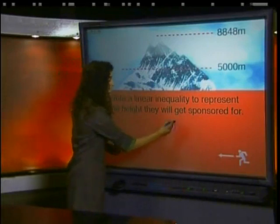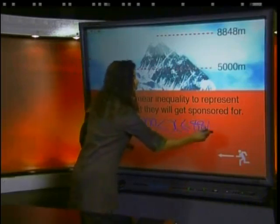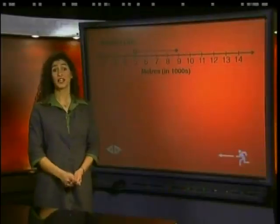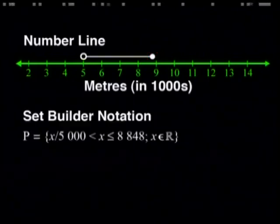So we can write our inequality: x is greater than 5,000 and less than or equal to 8,848. We can represent this on a number line like this. The open dot on 5,000 tells us that we do not include 5,000. We have to go higher than 5,000 to be paid. We then have a solid line to show us that it's anything in between, and then we have a solid dot to tell us that we can go up to and including 8,848 meters. We can show this in set builder notation like this. This reads: p is the set of all x such that x is greater than 5,000 and less than or equal to 8,848, where x is an element of real numbers.